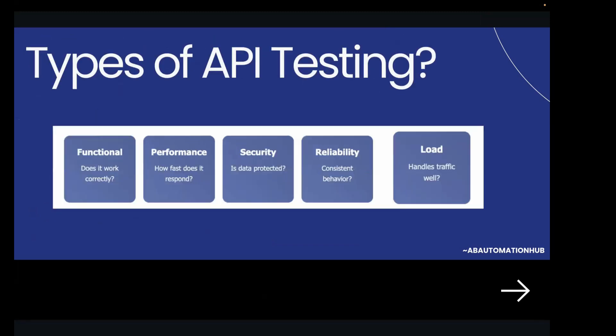Moving on to the next question: what are the different types of API testing? There are several types, but here are the main ones. First is functional testing — does the API do what it is supposed to do? Next is performance testing — how fast does your API respond under pressure? Then there is security testing — is the data protected, or can unauthorized people access it? Next is reliability testing — does it work consistently over time? And load testing — how many users can it handle at once? Basically, we are checking the traffic.